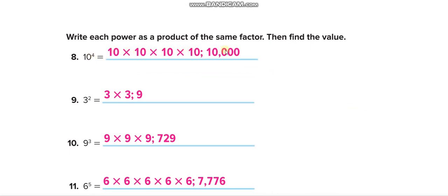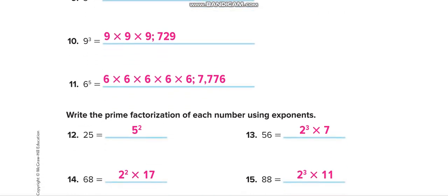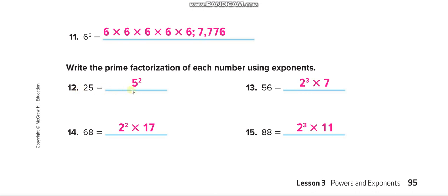So the power is 4, and you write 10 four times, which equals 1000. The power is 2, so write 3 twice, which equals 729 — because 9 times 9 is 81, and 81 times 9 is 729. The power is 5, so multiply 6 five times, which equals 7776.